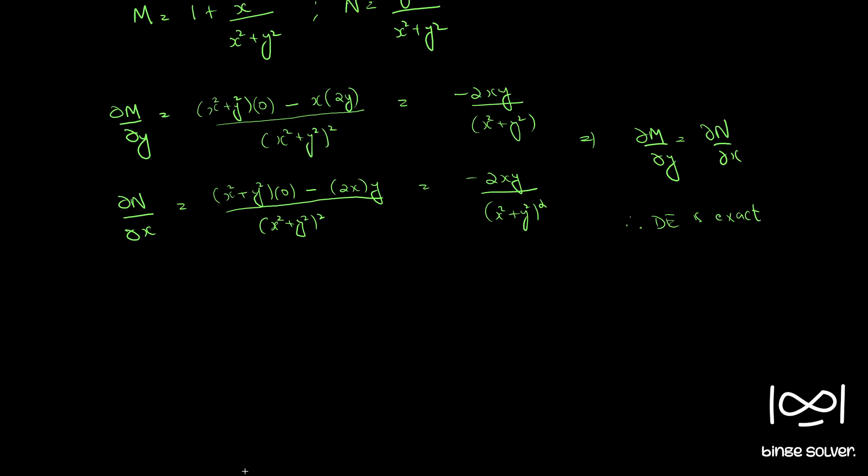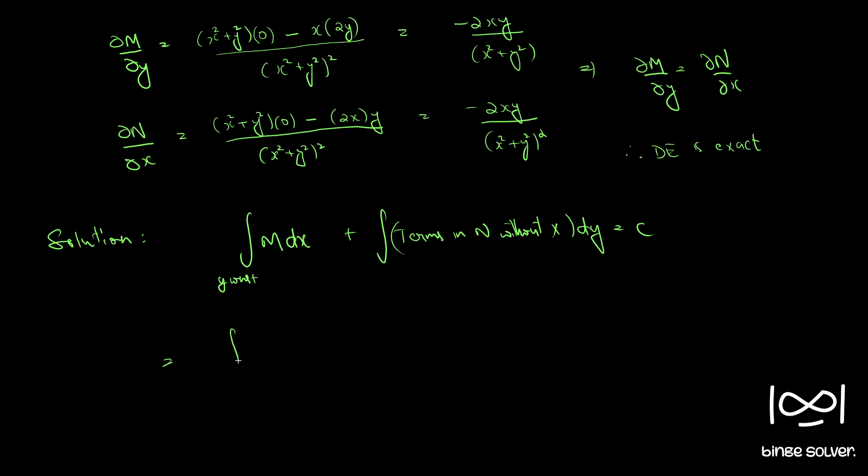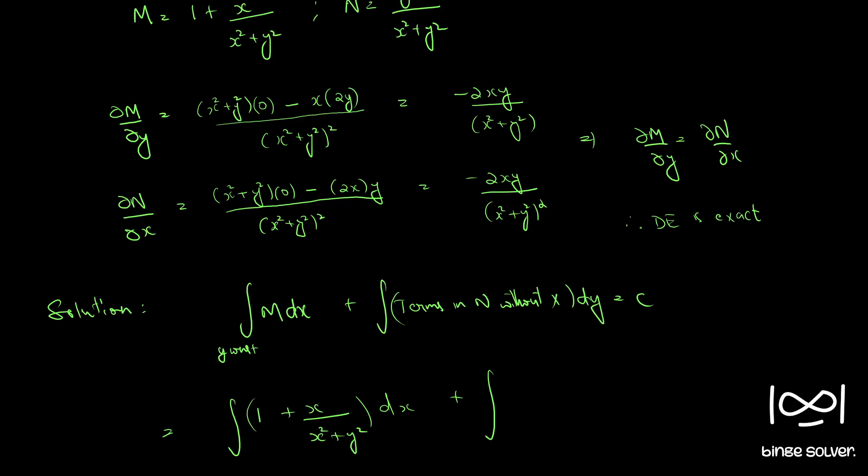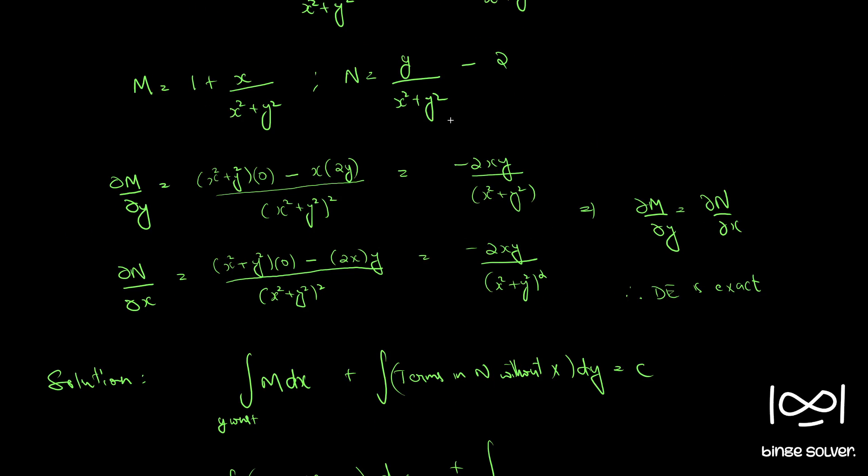Now, we have the solution as integral m dx, y constant plus, terms in n without x. Now, our m is 1 plus x by x square plus y square, plus integral terms in n without x. So, n is y by x square plus y square minus 2.